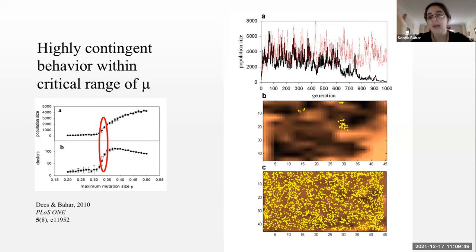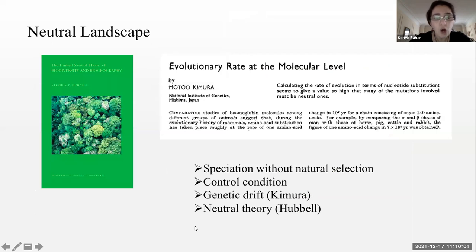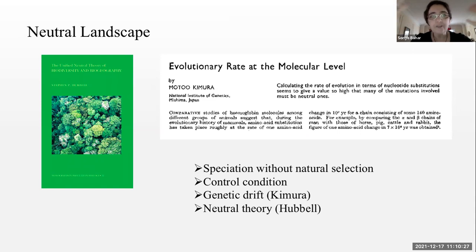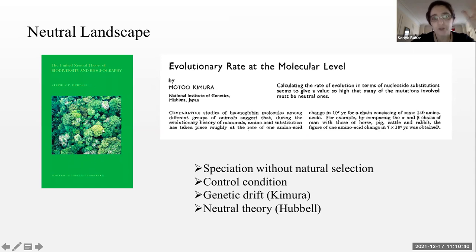There are interesting implications in terms of historical contingency when considering this as an evolutionary model. We wanted to dig into this in a more rigorous way. What you saw was a rugged landscape, but we want to simplify things and look at something more mathematically tractable. So we decided to look more carefully at a neutral landscape where every organism has the same fitness. You can consider this from a biodiversity standpoint as something like the neutral theory suggested by Stephen Hubbell, or think of it as genetic drift.